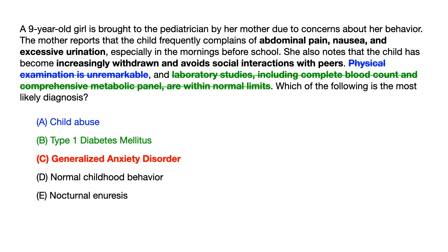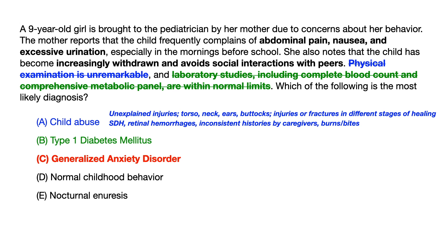The fact that the physical exam is unremarkable effectively rules out child abuse. For the purposes of USMLE and COMLEX, if the test writer wants you to pick child abuse, there are unfortunately a host of physical symptoms they could give you. Those symptoms would be unexplained injuries — especially in somebody not yet walking, like an infant who is only crawling or not even crawling yet. If there are injuries on the torso, the neck, the ears, or the buttocks, these are considered red flag areas, and bruising or injuries there would raise your suspicion for child abuse.